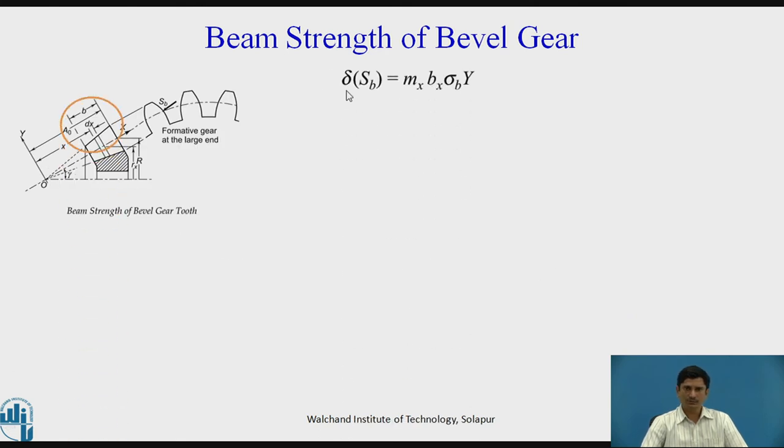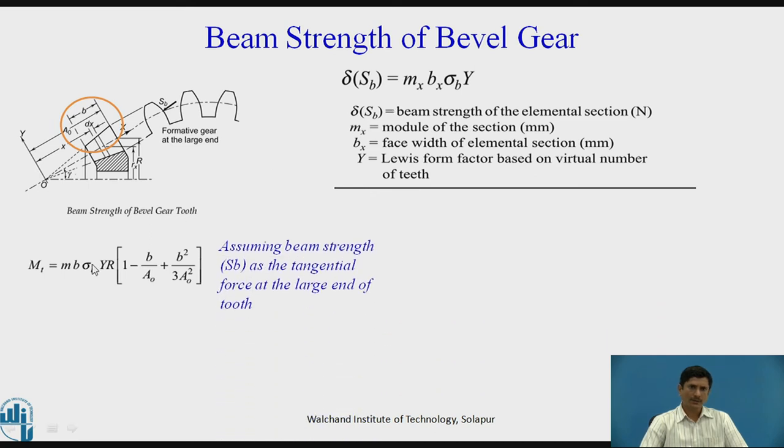Now for the same zone, we are solving for delta Sb: Mx Bx sigma B Y with usual notations. Mt equals Mb sigma B Yr 1 minus B by A0 plus B square upon 3 A0 square. Parallel to this equation, if we assume that this is the Sb acting at the larger end of the tooth, tangential force, I can get another equation for torque Mt: Mt equals Sb into R, as it is acting at the larger end of the tooth, the radius is equal to capital R. I can write the equation for beam strength using these two equations. If I put this Mt equals Sb into R, R and R gets cancelled, and we get the equation for Sb equals Mb sigma B Y into bracket 1 minus B by A0 plus B square upon 3 A0 square.